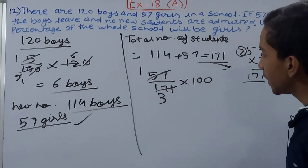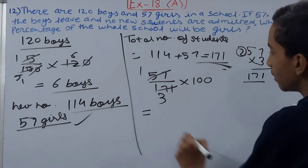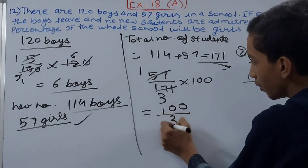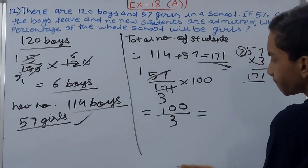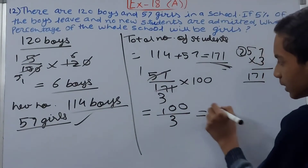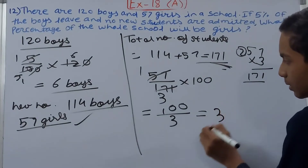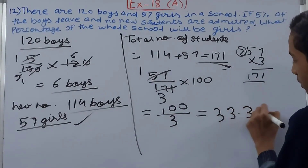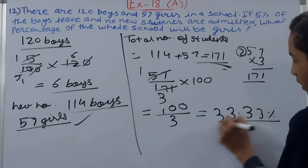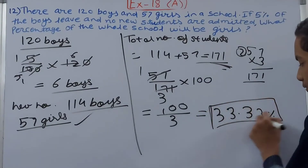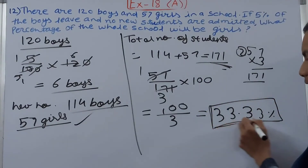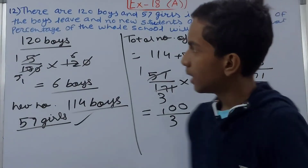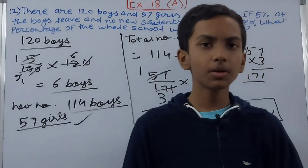Now 3 and 100 cannot be canceled, so we get 100 upon 3, which equals 33.33 percent. This is our final answer. You can also express it as a mixed fraction, but we'll keep it as a decimal.